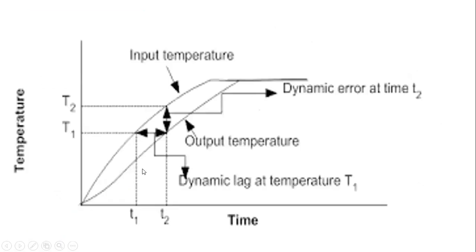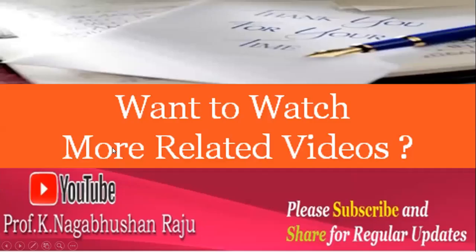In summary, when plotting output versus input with respect to time: T2 minus T1 is the dynamic error at time T2, and the small t2 minus t1 is the dynamic time lag at temperature T1. This is how we understand the dynamic characteristics of instruments and measurement systems.